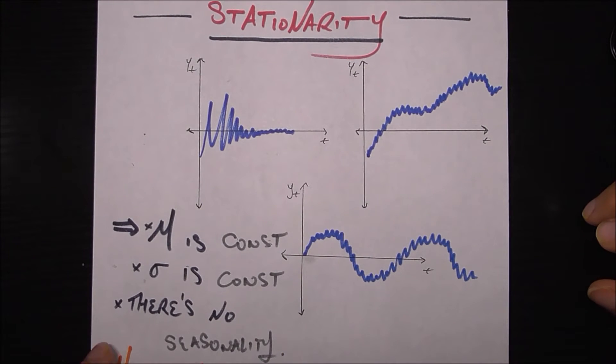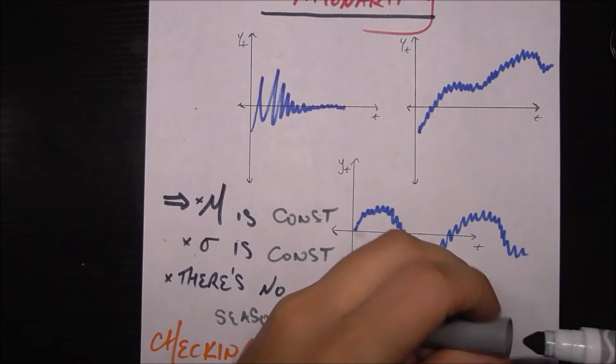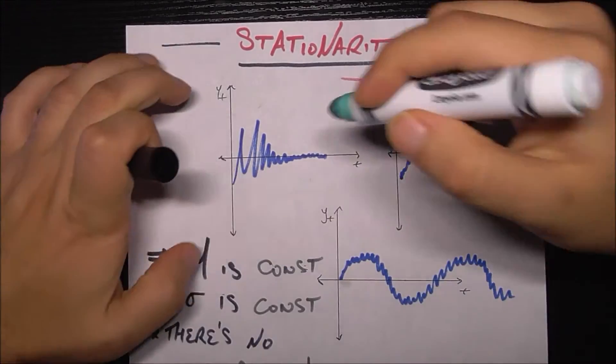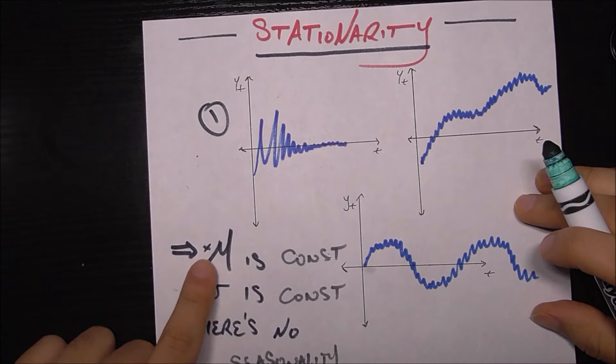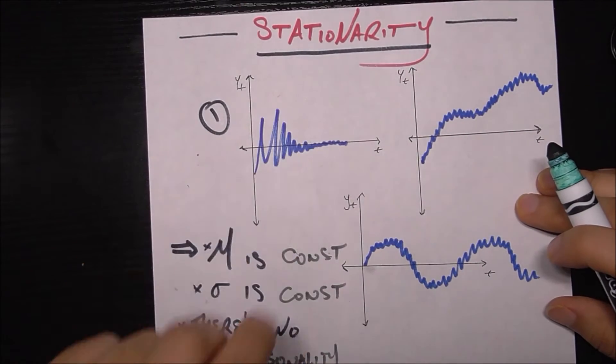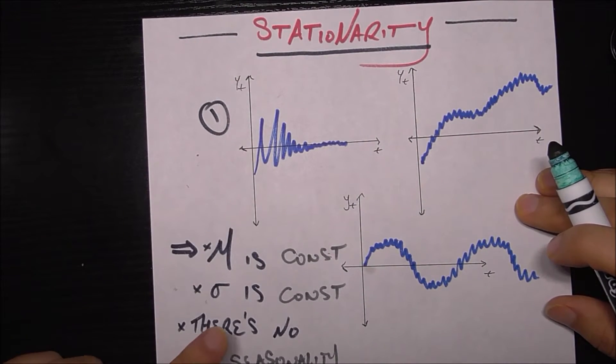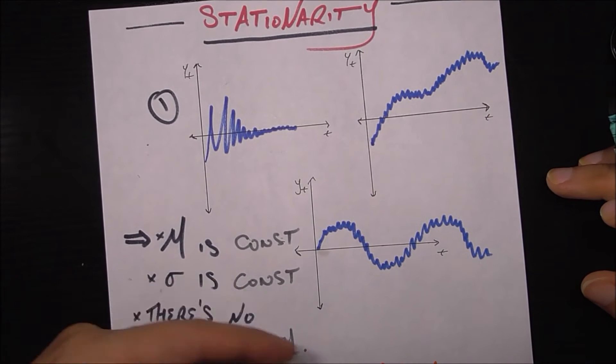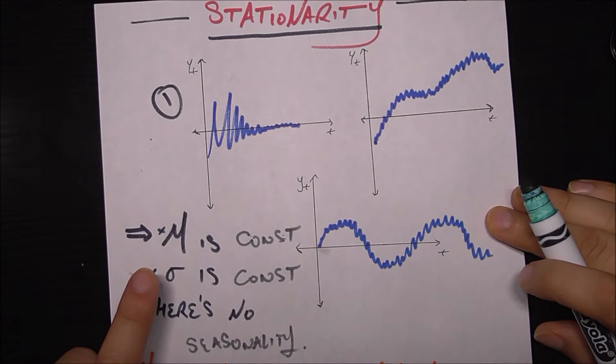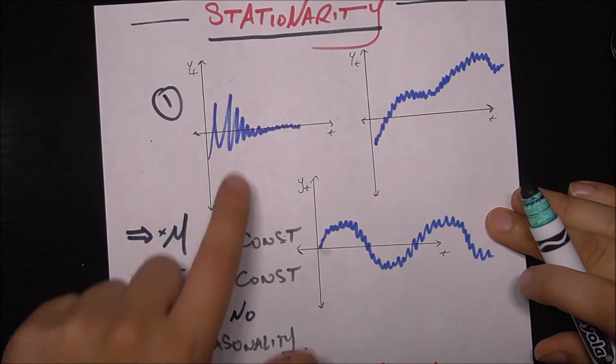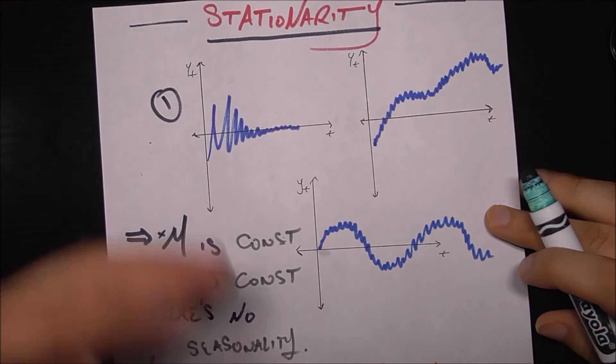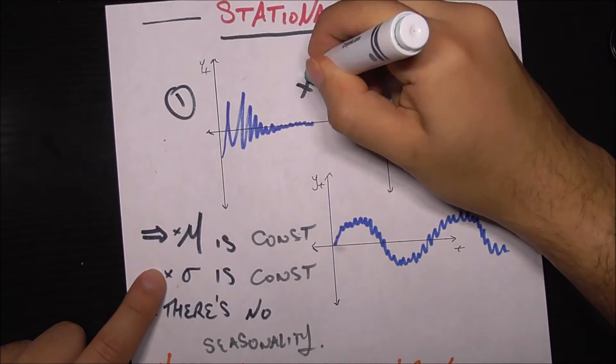So what we have here are three time series and each of them violates one of these criteria. Let's look at time series one right here. The mean is constant, it's around this axis right here. There is no seasonality. But the problem is sigma, or the standard deviation or the volatility, is not constant. Obviously in the beginning there's a lot of fluctuation, a lot of standard deviation. Then as time goes on it kind of dies out. So for that reason it's violating condition number two. It's not stationary.